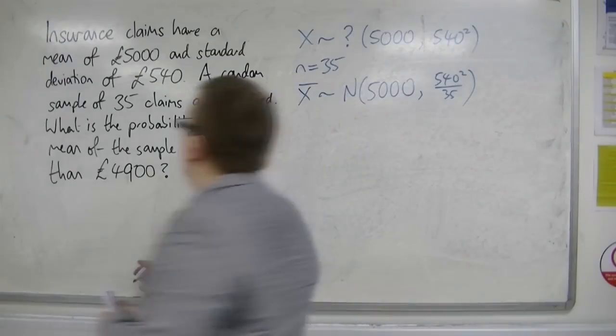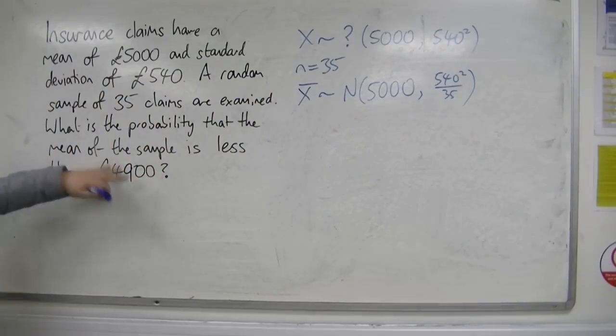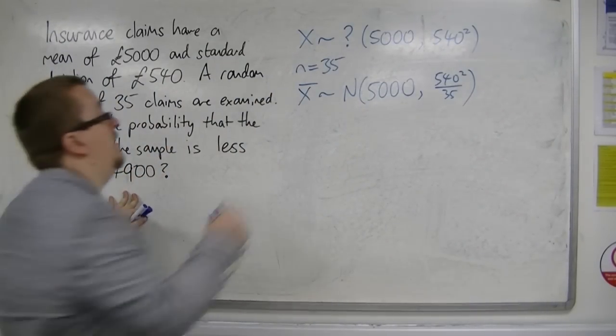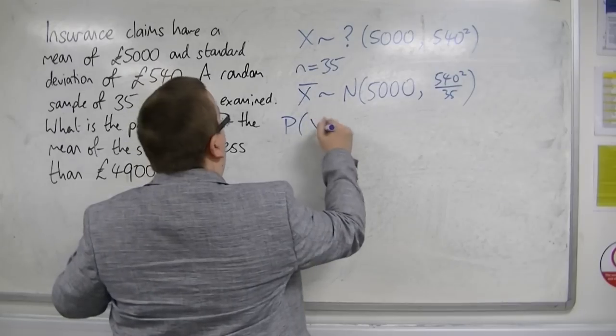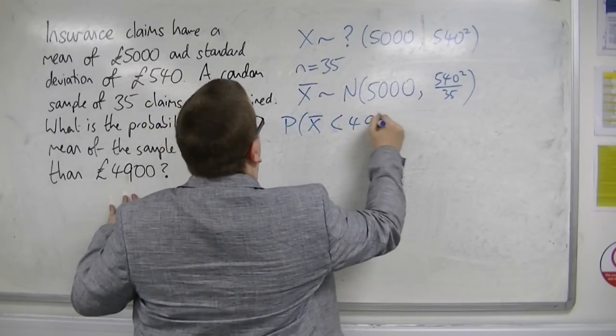So what we want to find is the probability that the mean of the sample is less than £4,900. So the probability that x-bar is less than £4,900.